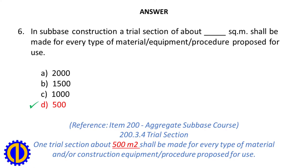Reference: Item 200, Aggregate Subbase Course, Trial Section. One trial section about 500 square meters shall be made for every type of material and/or construction equipment procedure proposed for use.